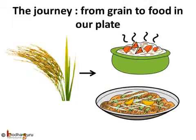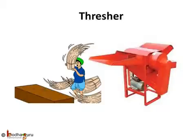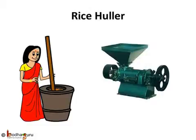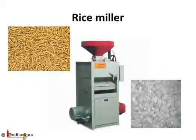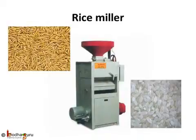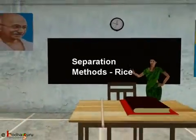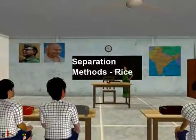We discussed just one of the many ways used by different people, and many people follow other techniques too. Nowadays, even machines are used for all the separation techniques. For example, a rice thresher is used. Instead of manually pounding the rice grains to separate the hulls or chaff, a rice huller may be used. Also, a single machine may perform more than one separation method — like the rice miller, which can remove the chaff, husk, and bran layers to produce white rice for consumption. That was a lot of information about rice. Bye bye kids!